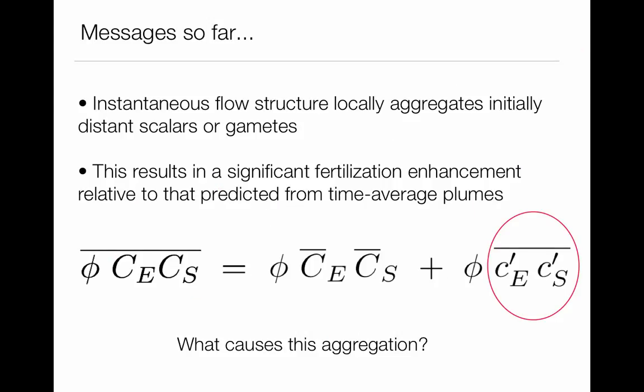And again, this is an idea of being able to use a dynamical systems approach to try and look at a biological problem. So the message so far is that the instantaneous flow structure locally aggregates these scalars or gametes that initially started far apart because the adults were far apart. But it actually causes the selective aggregation. And that results in significant fertilization enhancement. And that all happens out here in this correlation term.